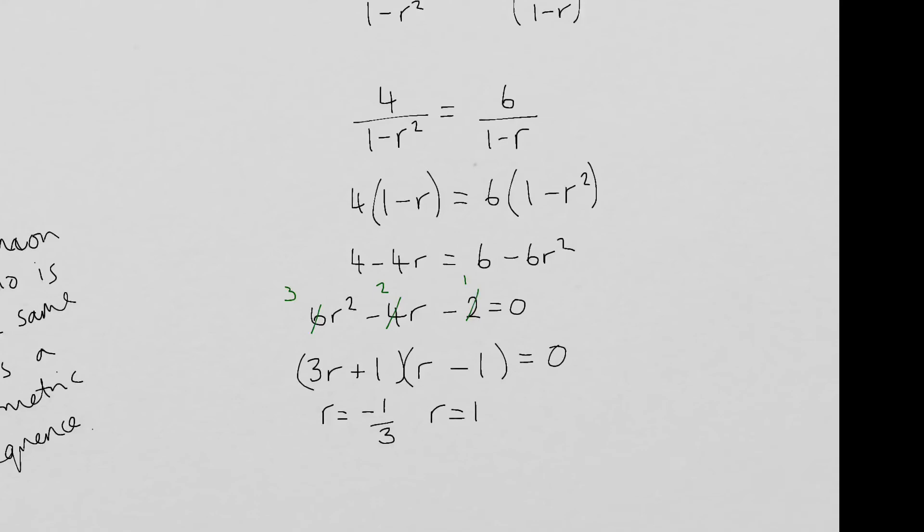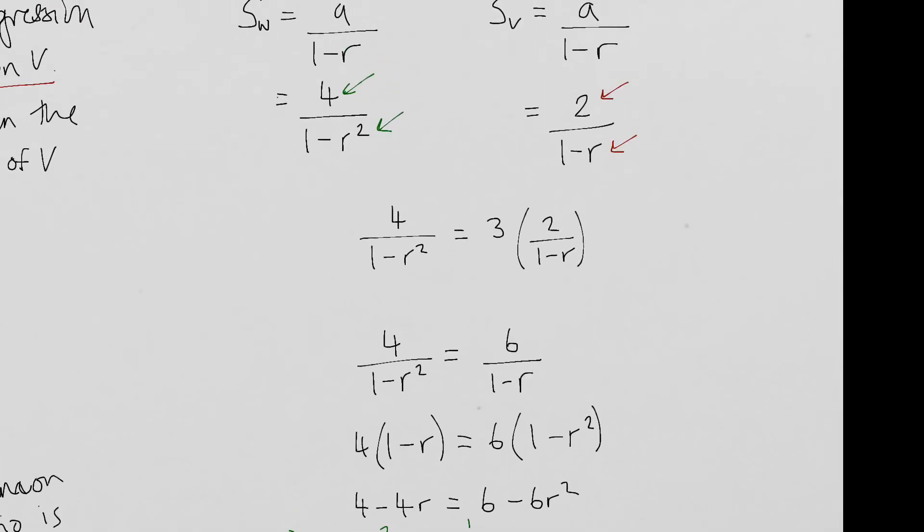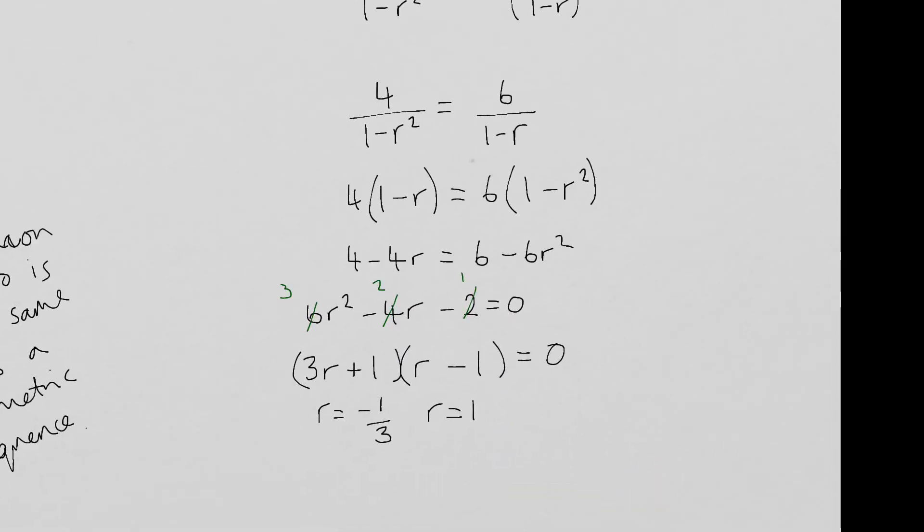If I just take you back up slightly, have a look at what would happen if I substituted R equals one into there or into there. You'd notice that your denominator would become zero. Now that would create an asymptote. It would create a math error on your calculator if you try doing four divided by zero. So we can't really take R to be equivalent to one. That's not also going to produce a geometric sequence.